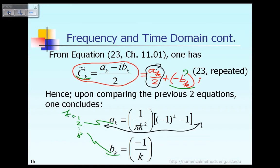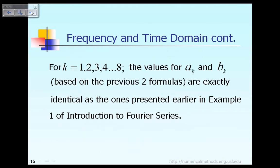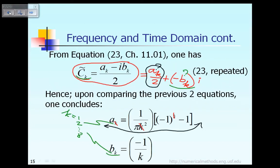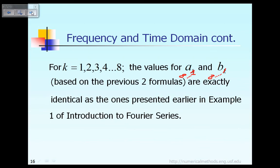For example, when you let k equal to 1, we can calculate a_1. If you let k equal to 2 everywhere in this formula, then we can calculate a_2. By doing that, you can calculate all values of a_k where k goes from 1 all the way to 8, and b_k where k goes from 1 to 8. These a_1 up to a_8 calculated based on the previous formula will give exactly the same answer as presented in my earlier lecture when we discussed Fourier series coefficients — that was example number 1.